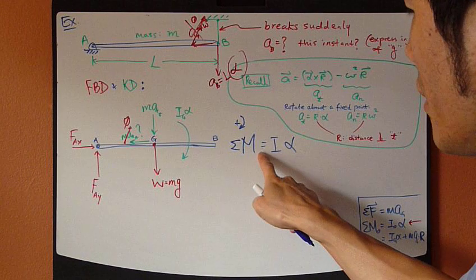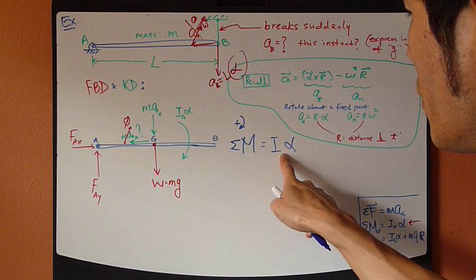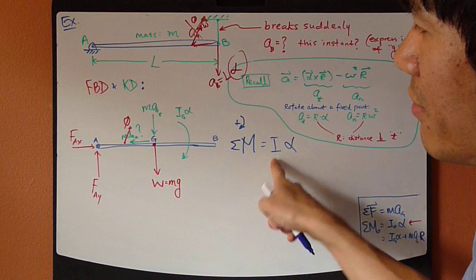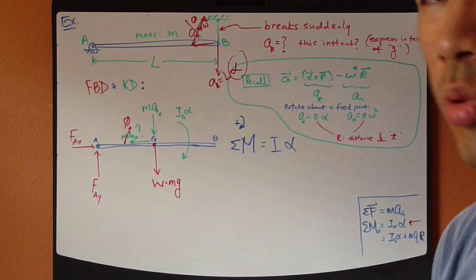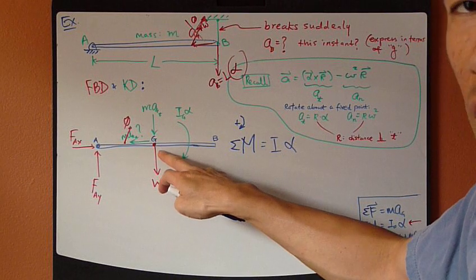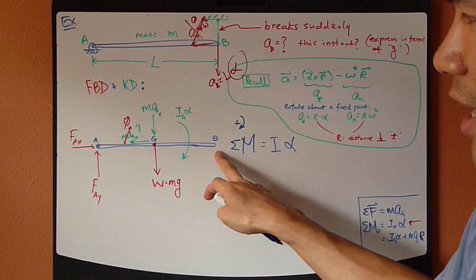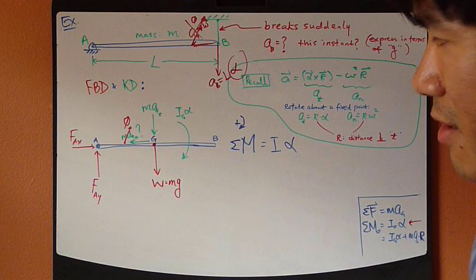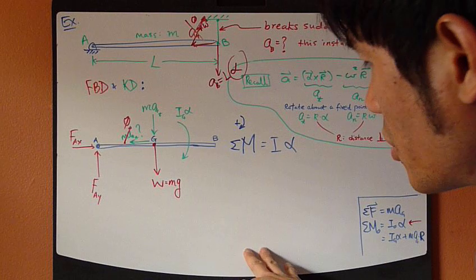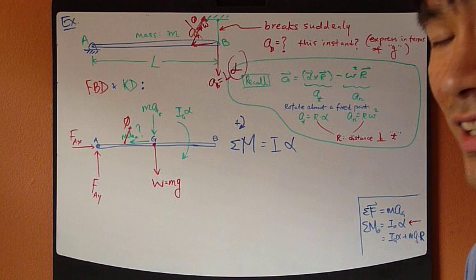Now, here, you need to choose a point to take a moment about. You can choose any point you like. You can choose to take a moment about point G, center of gravity, or point B, if you like, or point A. So, whatever point you choose, you can work through the solution. It should give you exactly the same answer.